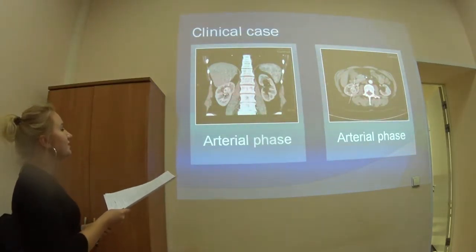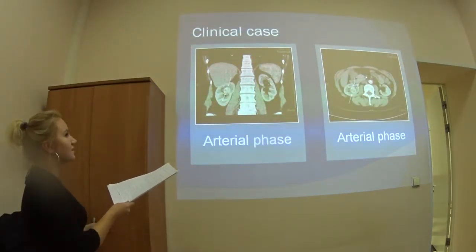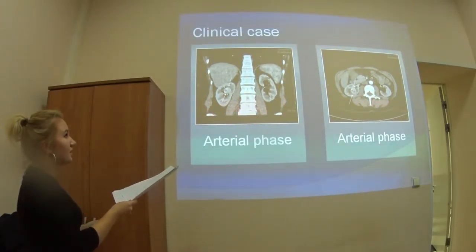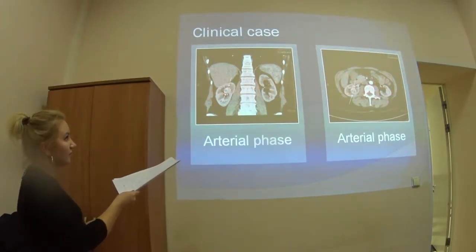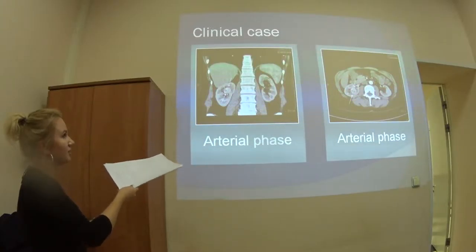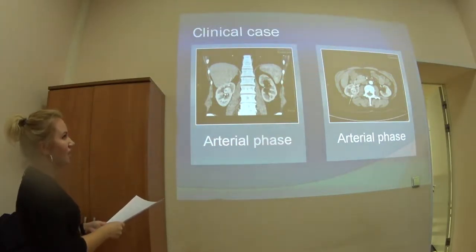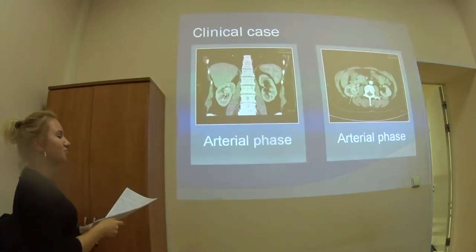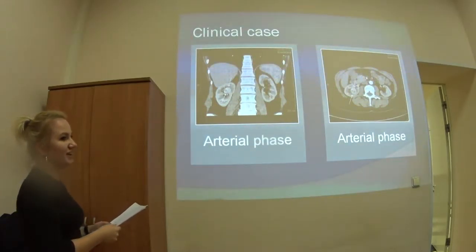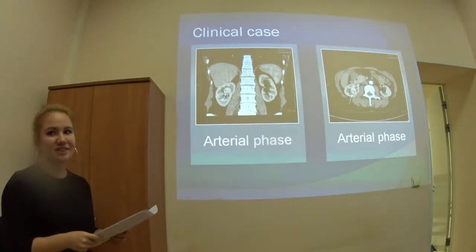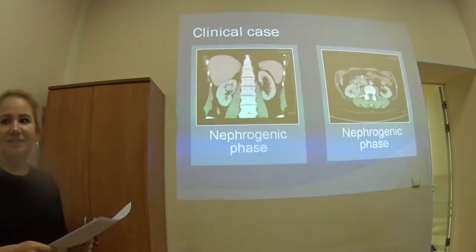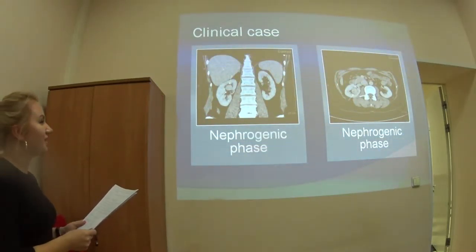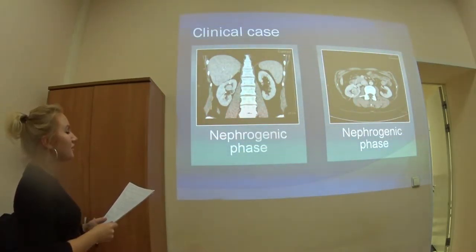In the arterial phase, we can see that it's really enhanced by the contrast and the enhancement is heterogeneous, which lets us say that it could be a clear cell carcinoma. In the nephrogenic phase, you can see that this tumor is low-density.